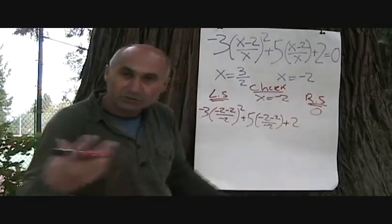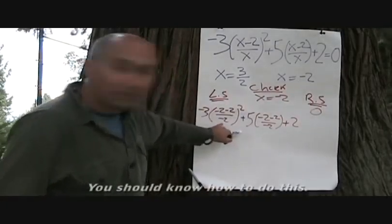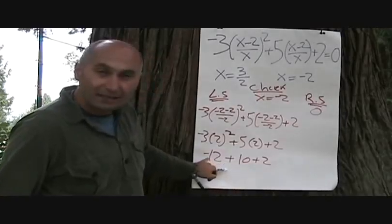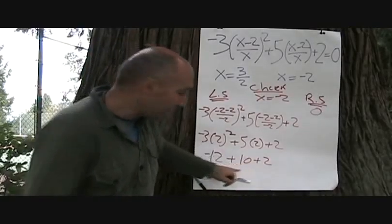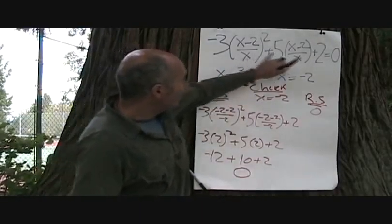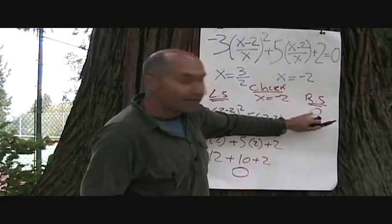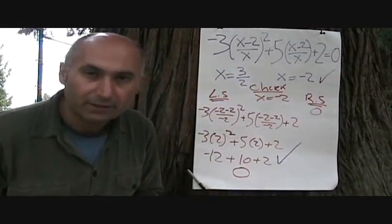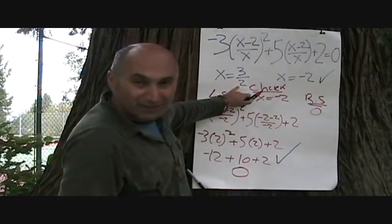We simplify this to see if the left side equals zero. Negative 2 plus 2... so negative 12 plus 10 plus 2 - that's just zero. The left-hand side when you plug in X equals negative 2 is equal to zero, and the right-hand side is equal to zero, so this works out and we know this answer is correct. For the next one, X equals 3 over 2, this will take a bit longer because there are fractions, so let's check it quickly.